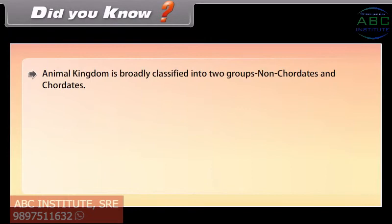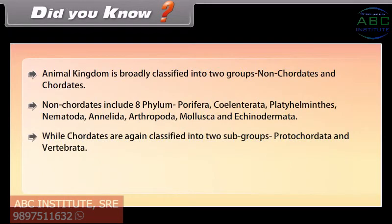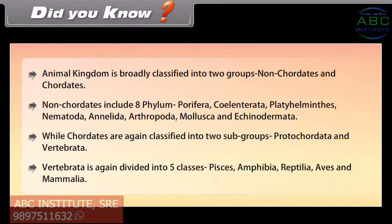Animal Kingdom is broadly classified into two groups: Non-Chordates and Chordates. Non-Chordates include eight phyla: Porifera, Coelentrata, Platyhelminthes, Nematoda, Annelida, Arthropoda, Mollusca and Echinodermata. Chordates are again classified into two subgroups: Protochordata and Vertebrata. Vertebrata is again divided into five classes: Pisces, Amphibia, Reptilia, Aves and Mammalia.